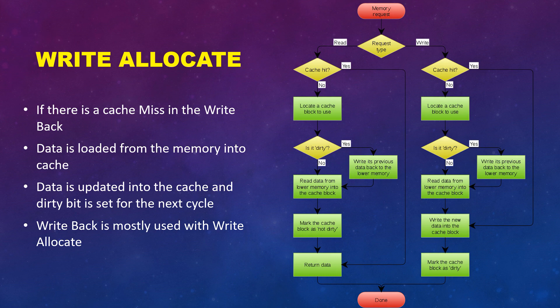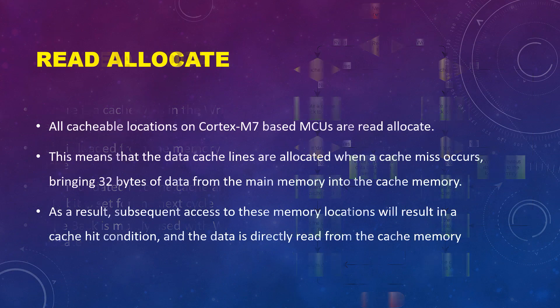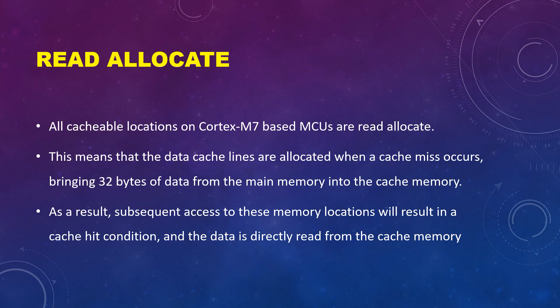Next is read allocate. Every cacheable location in Cortex-M7 is read allocate. In case of a cache miss, cache lines are allocated for that particular data, so the next access to cache will be a hit.